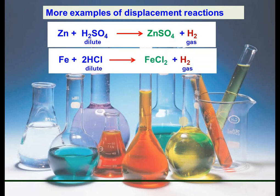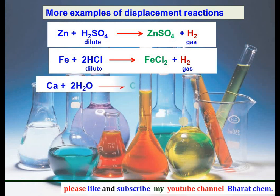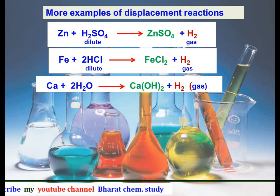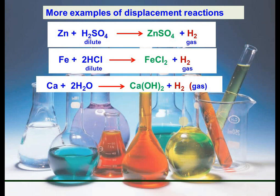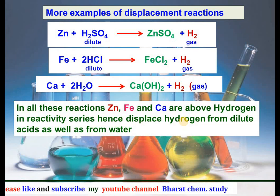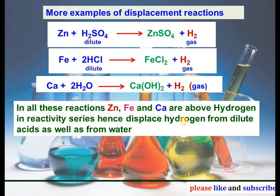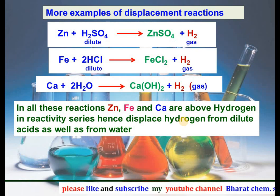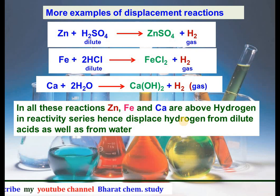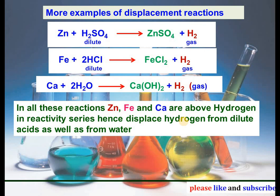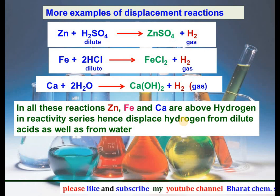Similarly, iron when added to HCl forms FeCl2 and hydrogen gas is produced. Calcium is also more reactive than hydrogen; therefore when calcium reacts with water it forms calcium hydroxide and produces hydrogen gas. In all these reactions, zinc, iron, and calcium are above hydrogen in the reactivity series, so when they react with dilute acid or water they displace hydrogen to form hydrogen gas.